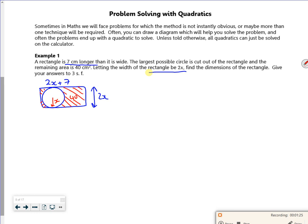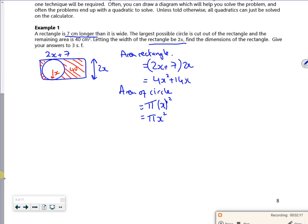So it says find the dimensions. So what do we know then? The area of the rectangle is going to be 2x plus seven multiplied by 2x. So that's just going to be 4x squared plus 14x. The area of the circle will be π times x squared. So πx². And now if we do the rectangle minus the circle, that's going to equal 40.